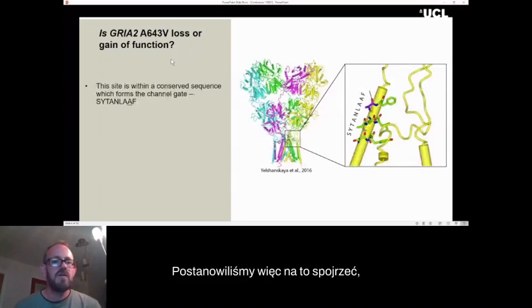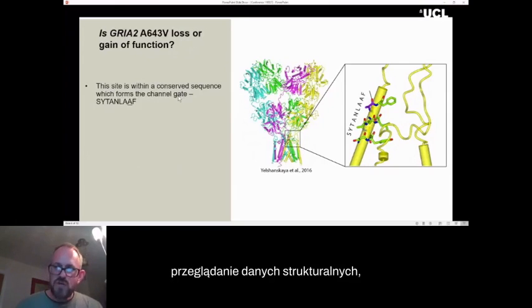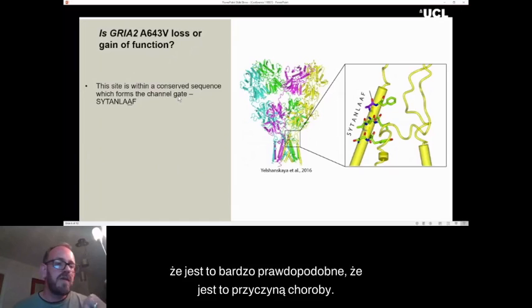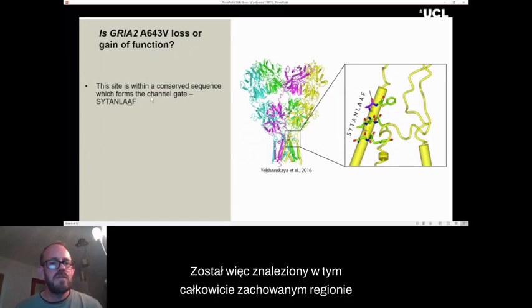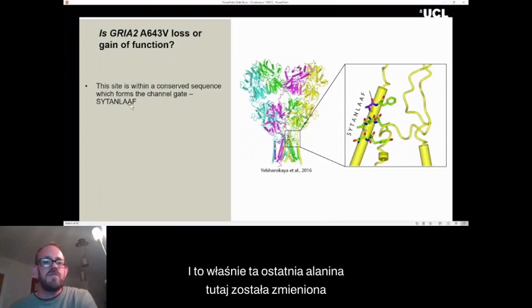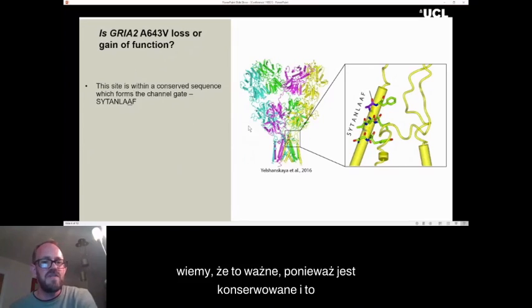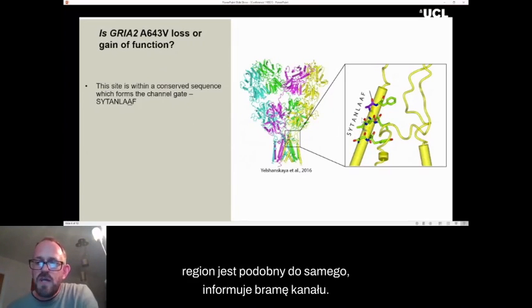It was immediately obvious by looking at the structural data that this was very likely to be disease causing. So it was found in this completely conserved region of the glutamate receptors, this nine amino acid stretch. And it was this final alanine here that was changed to a valine. And we know this is important because it's conserved. And this region forms the channel gate. So basically this bit of the protein is all bunched together, the four copies, when the channel is closed. And when the channel opens, they all spring apart. And that's what opens the ion channel that allows us to record electrical currents.